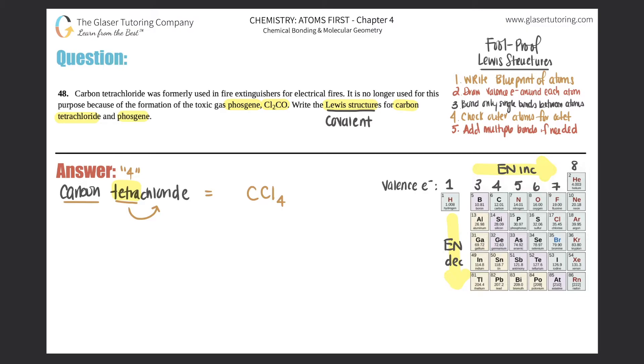So carbon would be in the middle, surrounded by the four chlorines. So let's get to it. So that's what the first step you should do, is just write the blueprint for your atom. So in this case, I have carbon that's surrounded by four chlorines. So one, two, three, and four. And now draw the valence electrons around each atom. So for carbon, there's four valence electrons. And for chlorine, there are seven valence electrons. So I'll put four dots around carbon and seven around chlorine.